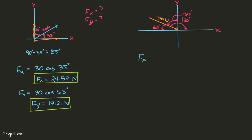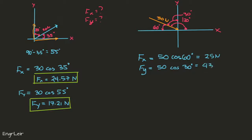For the components: F sub x equals 50 cosine of 60 degrees, the angle toward the x-axis, which equals 25 newtons. F sub y equals 50 times the cosine of 30 degrees, the angle toward the y-axis, which equals 43.3 newtons. Remember we are dealing with vectors, so direction is important.